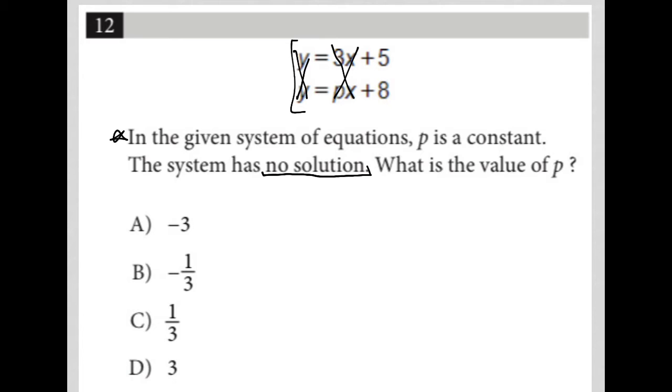How do we get the Ys to cancel out? Let me erase this so we can see. For the Ys, it's pretty straightforward. I can just subtract, which in essence means multiply the entire bottom equation by negative one. In doing that, it will make my Y negative, make this PX a negative PX, and make this positive eight a negative eight.